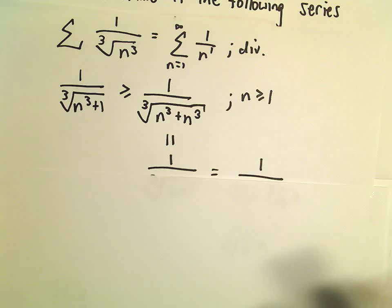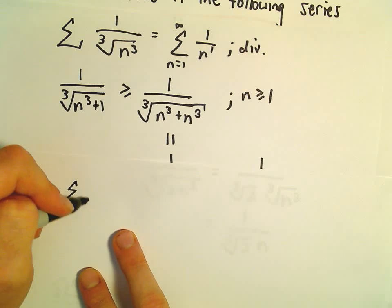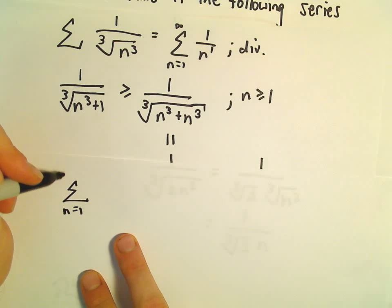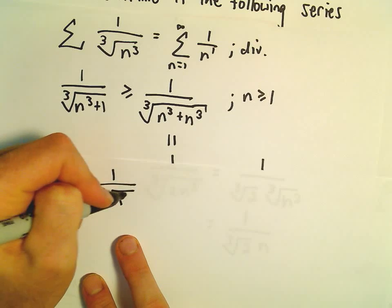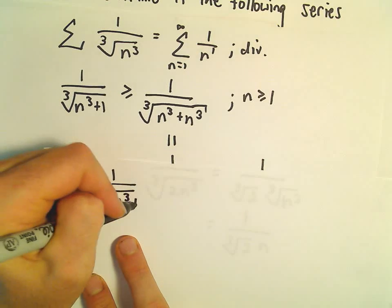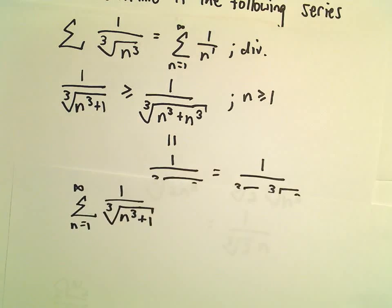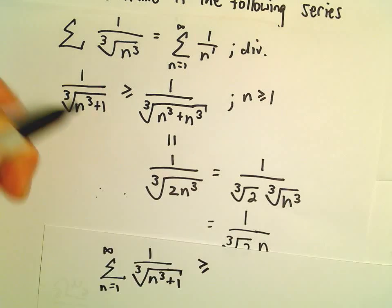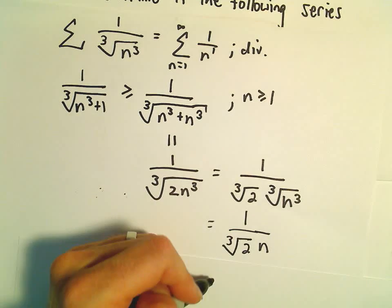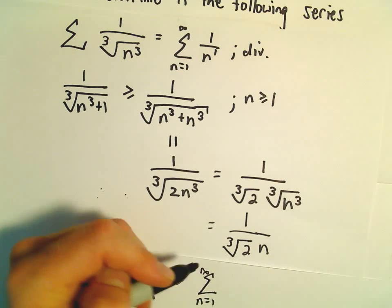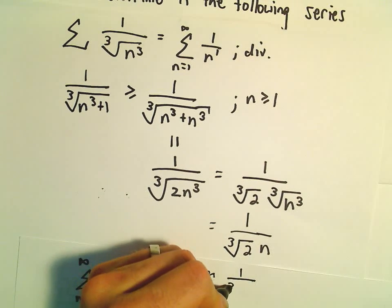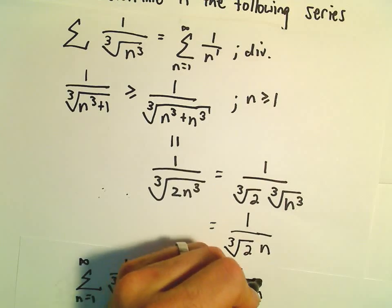So what we've justified now is the series n equals 1 to infinity of 1 over the cube root of n cubed plus 1—that was our original series—is going to be greater than or equal to the series associated with 1 over the cube root of 2 times n.